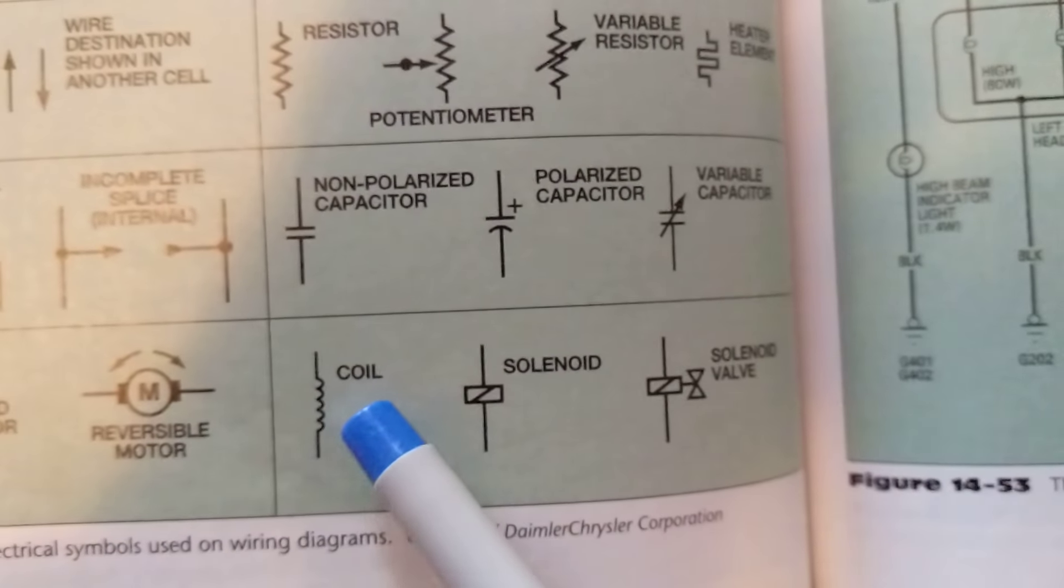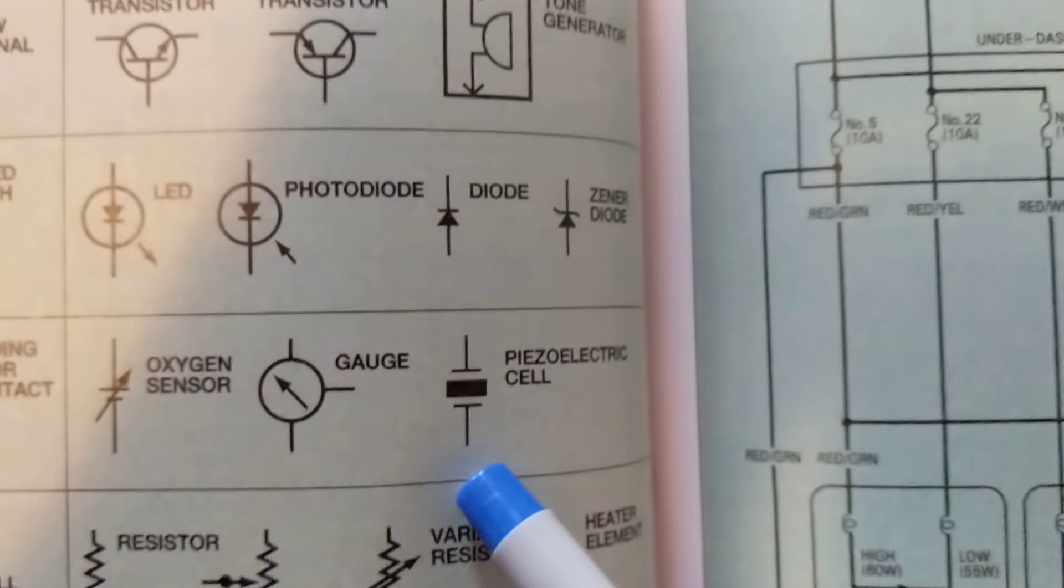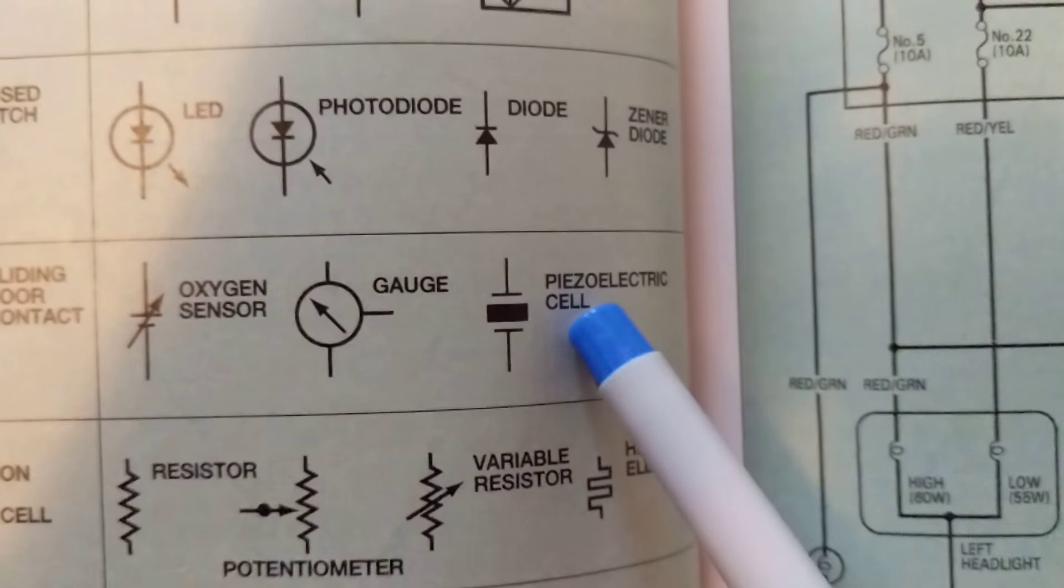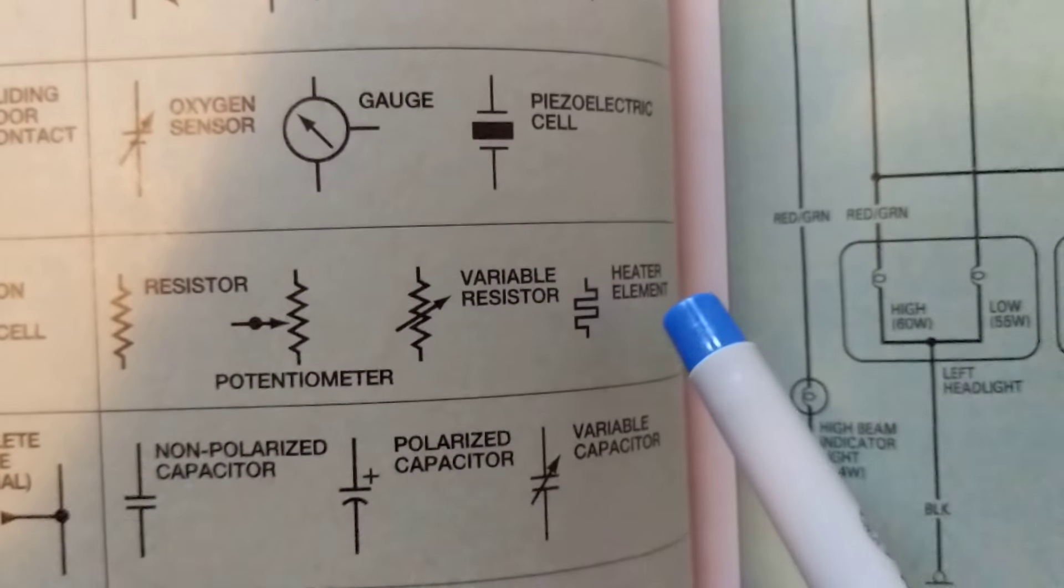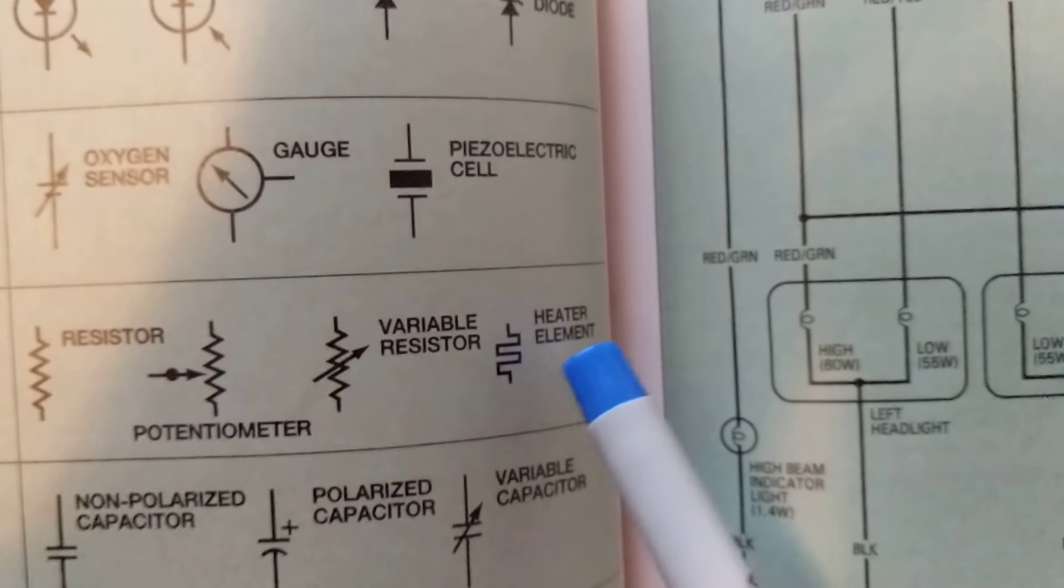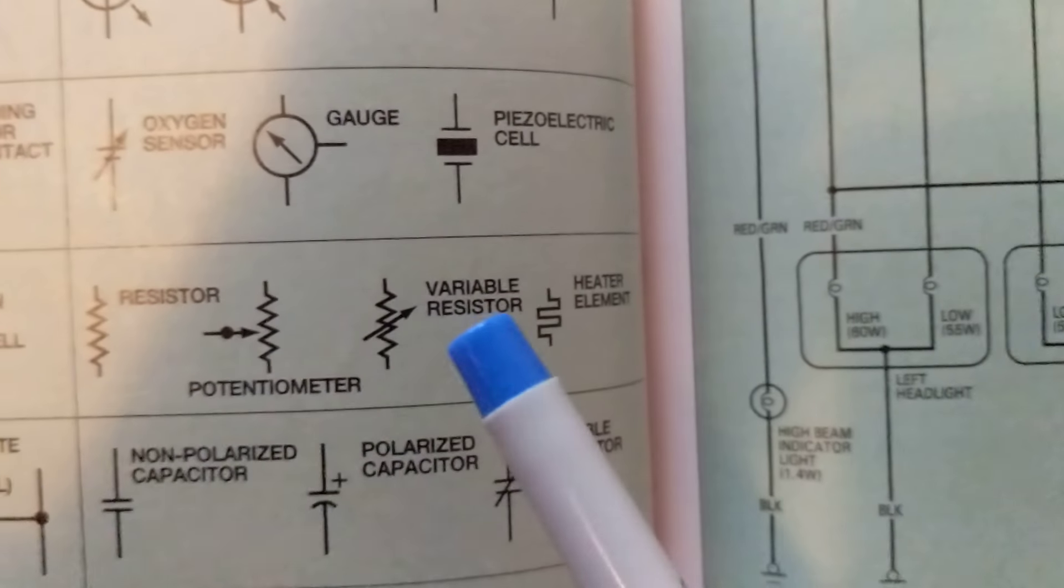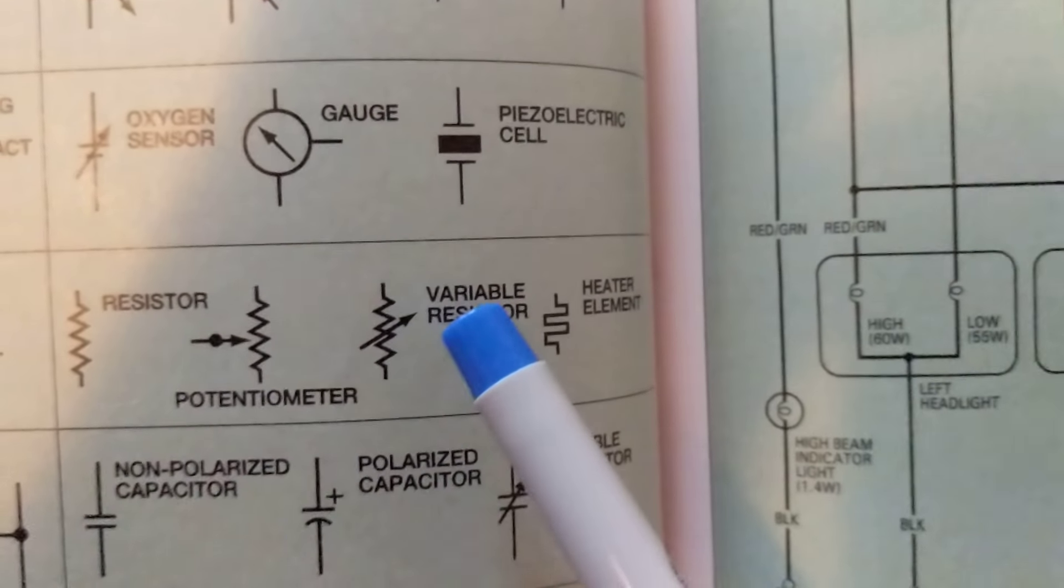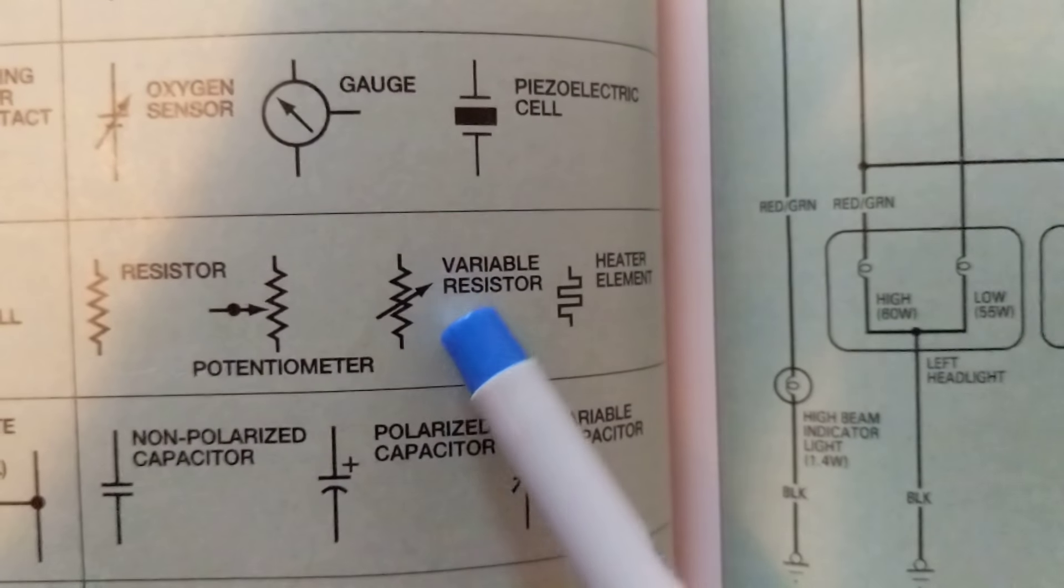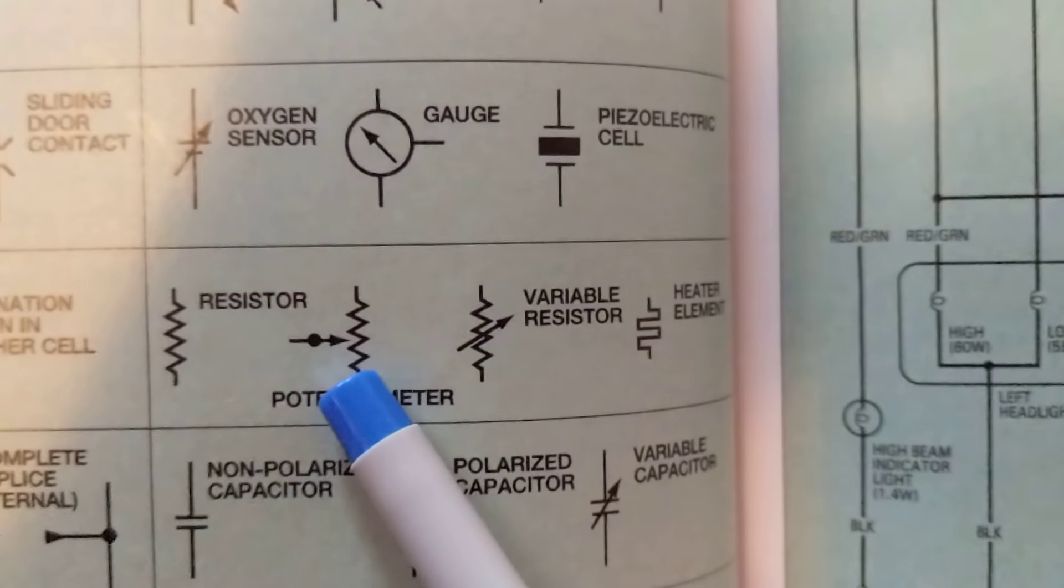A solenoid active in transmissions all over. Coils are all over in relays, you'll see that. Remember the symbols. Knock sensors, we have these variable resistors, heated element that heat up when it has current. Oxygen sensors, variable resistors, sensors, ECT sensors, IAT sensors, pots, TPS sensors.